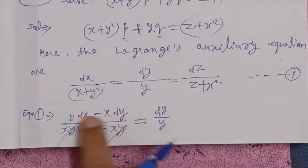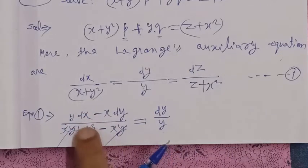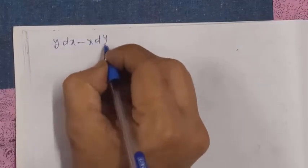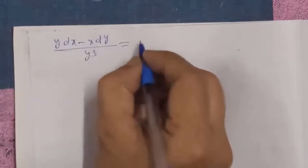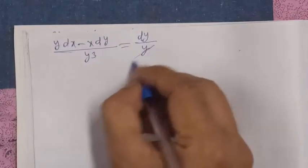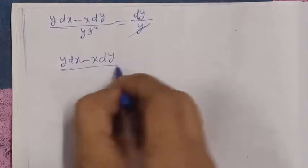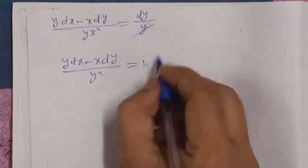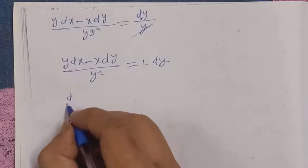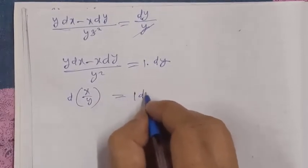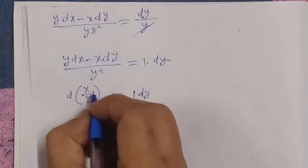We know that y dx minus x dy upon y squared gives us d(x/y). We check the exact condition: y dx minus x dy upon y squared gives the exact differential. We can see that x upon y is the derivative — the differentiation formula gives denominator squared in the denominator, as numerator differentiation minus numerator times denominator differentiation.